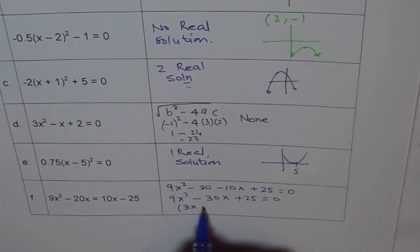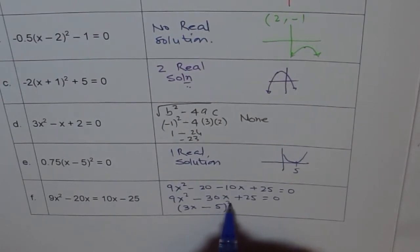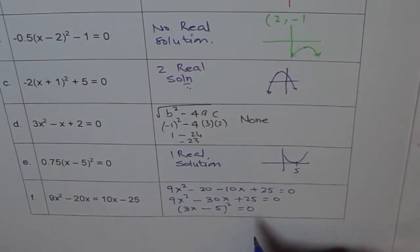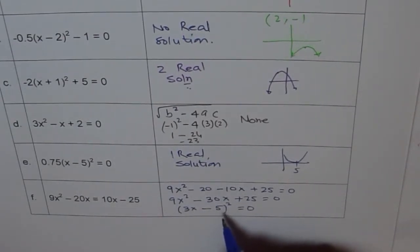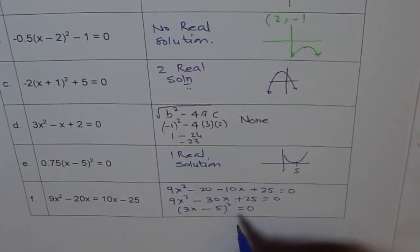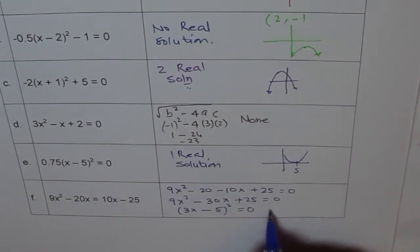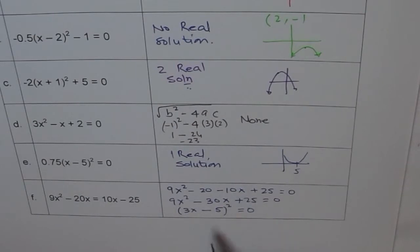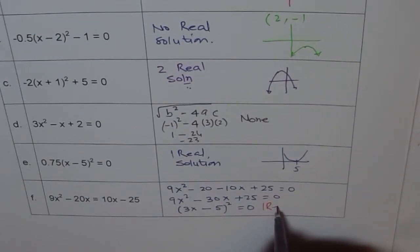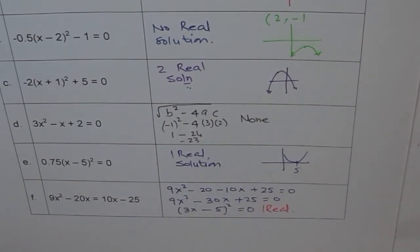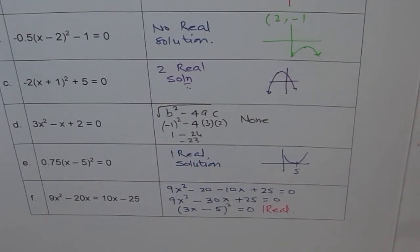Now in this particular case we see both the zeros are at one point. Therefore there is only one real solution, that means one real solution. So these are the different ways of figuring out how to find the number of real solutions here, right?